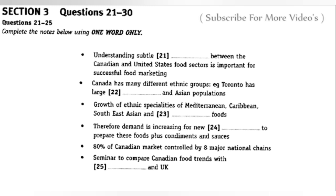Regarding how to organise the seminar, notes were made on trends in the Canadian market about changing tastes and also patterns for where food is consumed. The idea is to summarise this into a chart or table and use the overhead projector to present it. A comparison could also be made looking for similar trends in Australia and the UK.